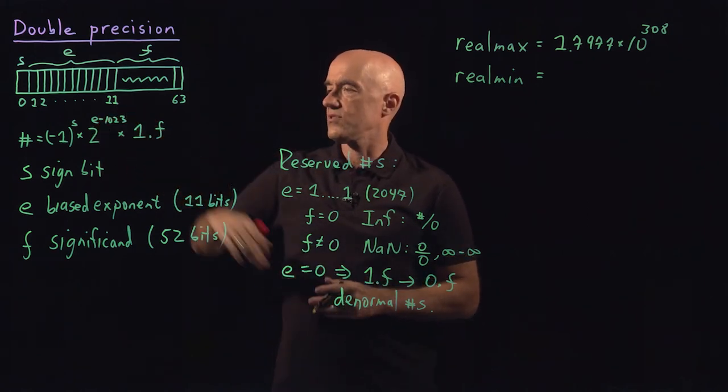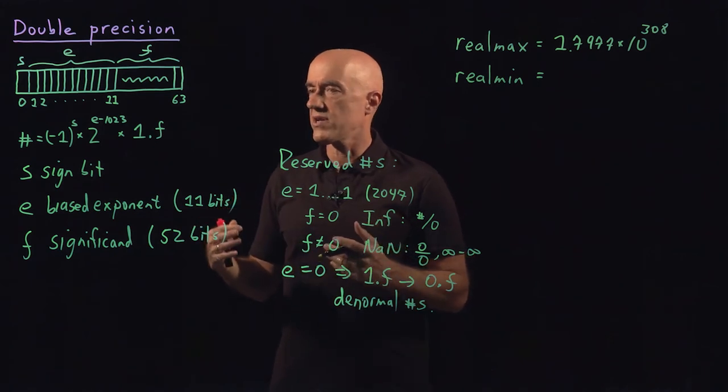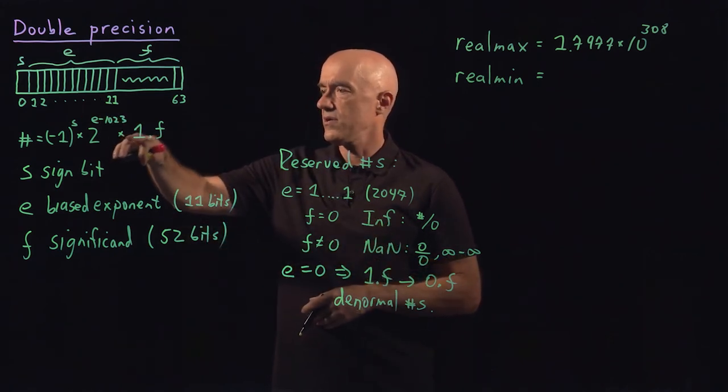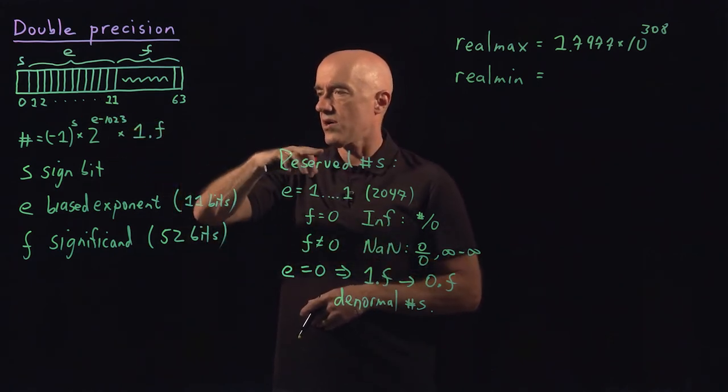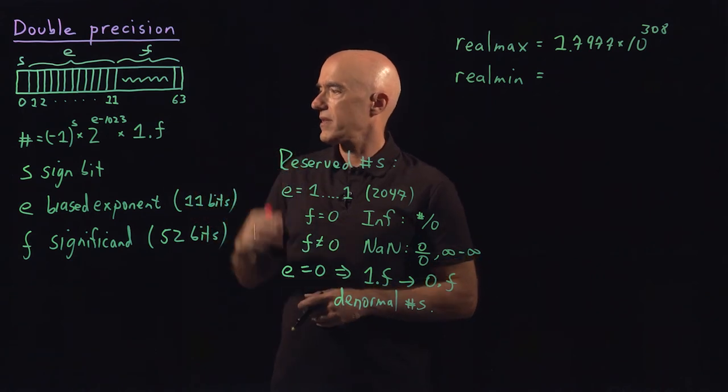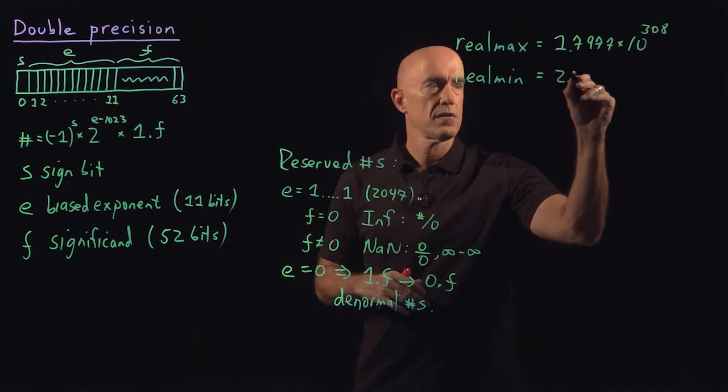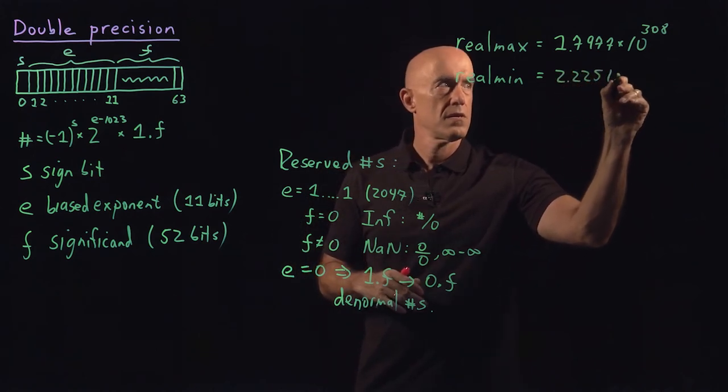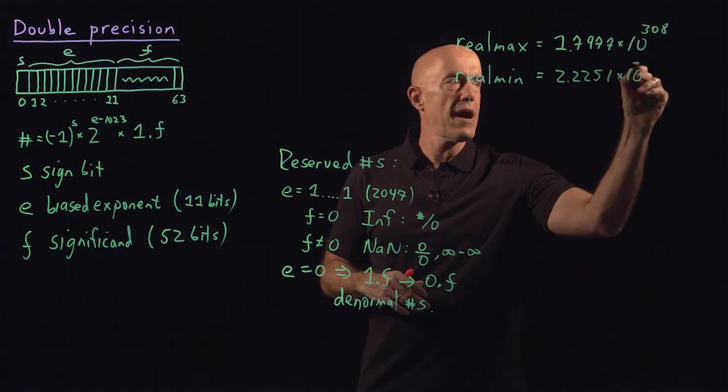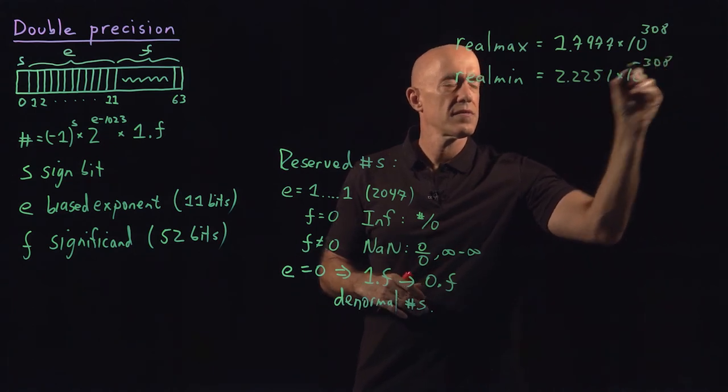which would be negative 1,022. So 2 to the negative 1,022 is a number very close to 0 times 1.0, times 1.0, all zeros here. If you calculate what that number is, it's 2.2251 times 10 to the minus 308.